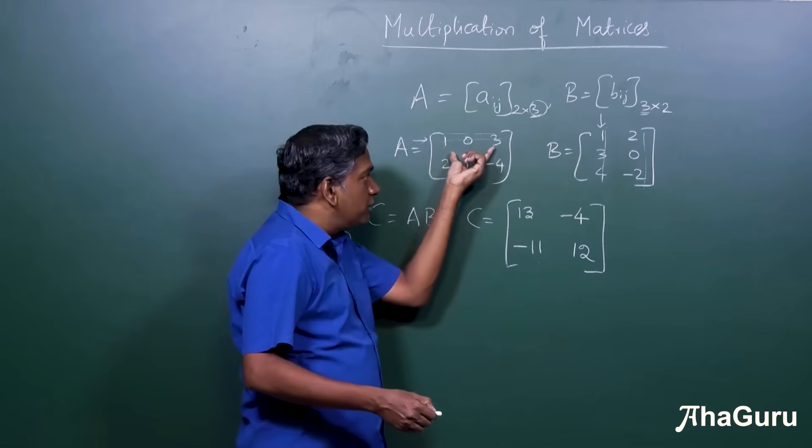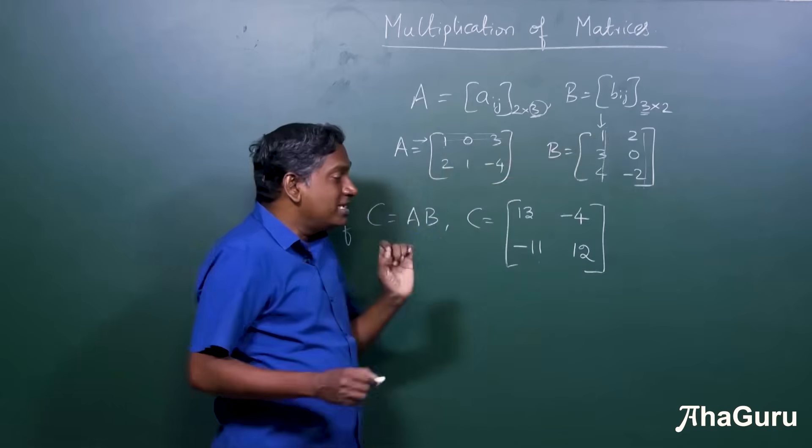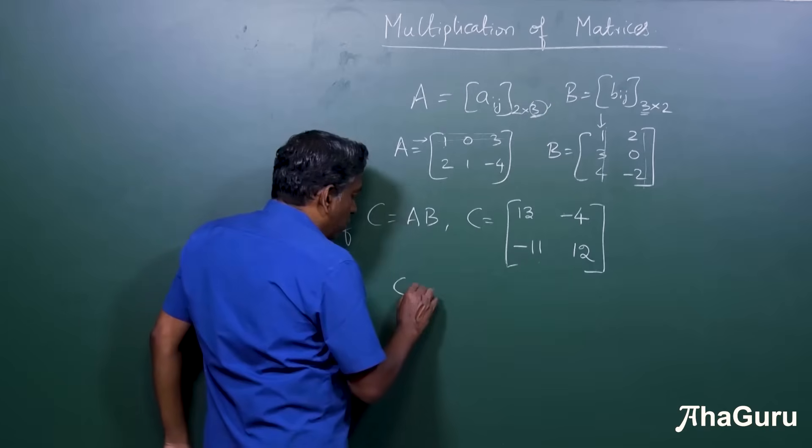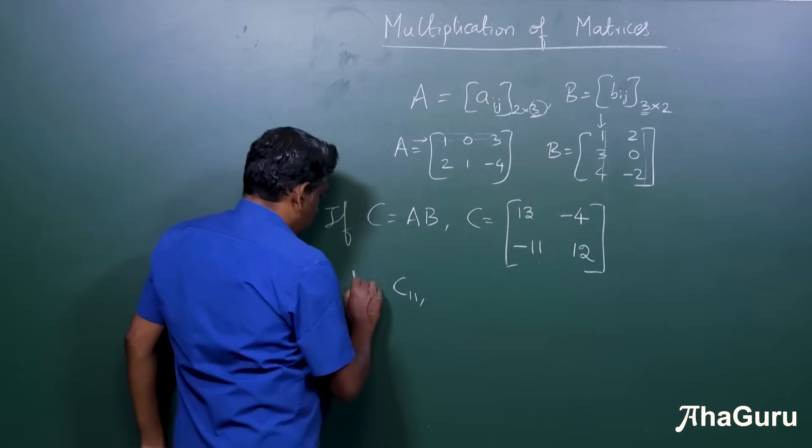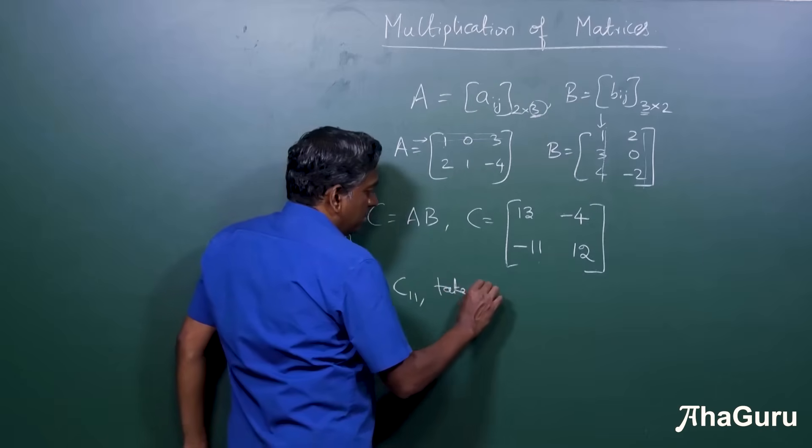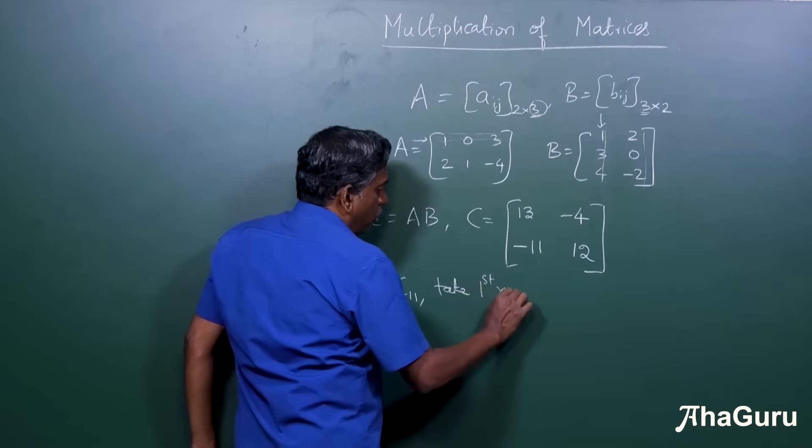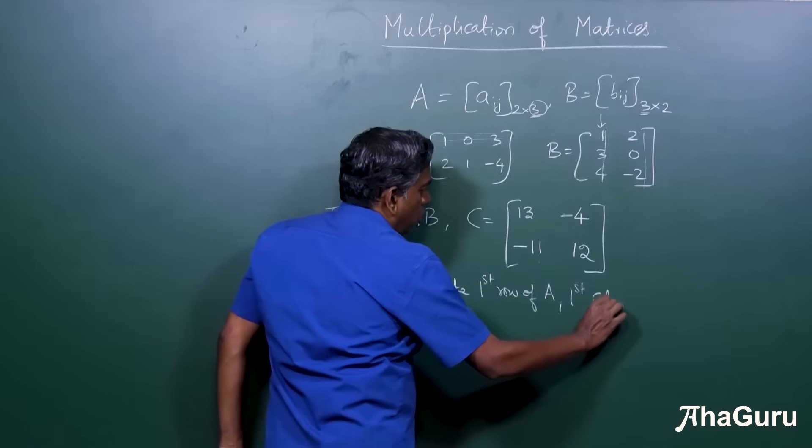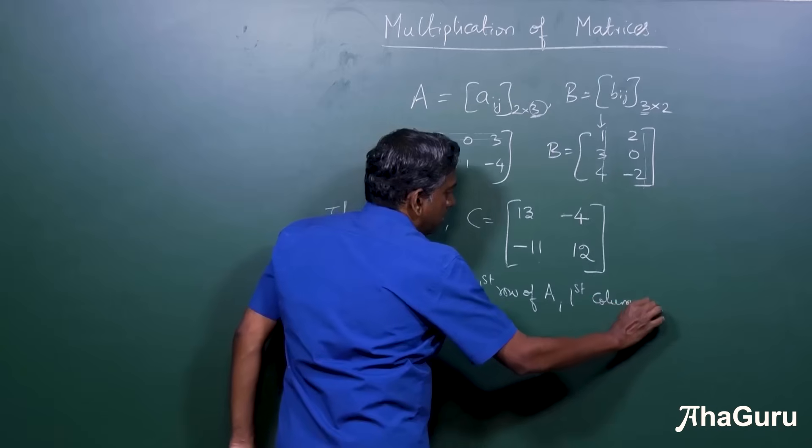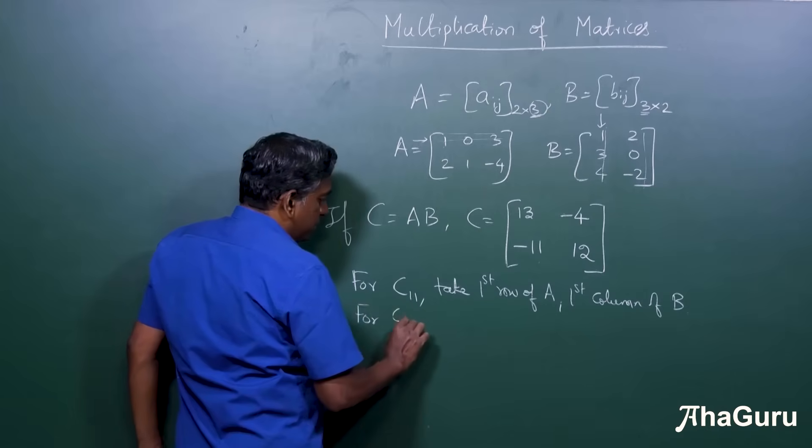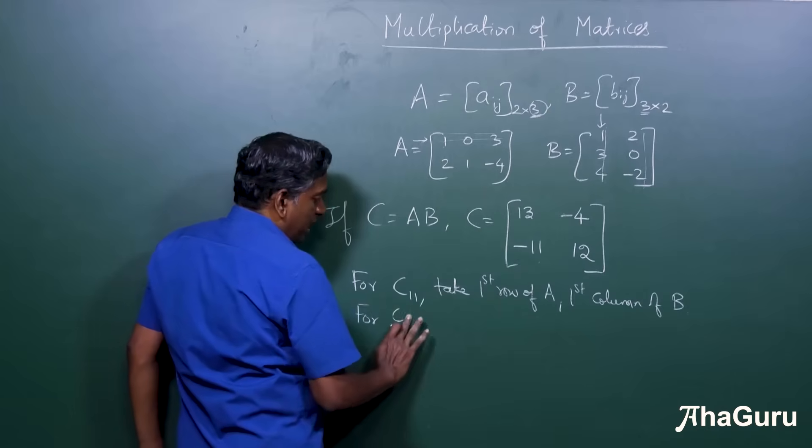Same thing do for first row, second column. So here is the deal. To get C11, take first row of A and first column of B. To get the value of C21, that is, this entry, take second row of A, first column of B.